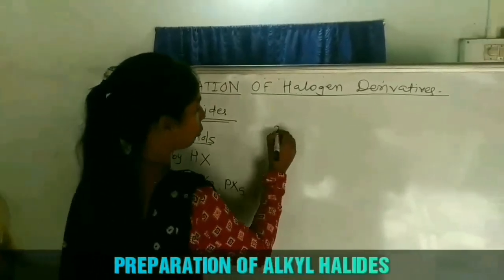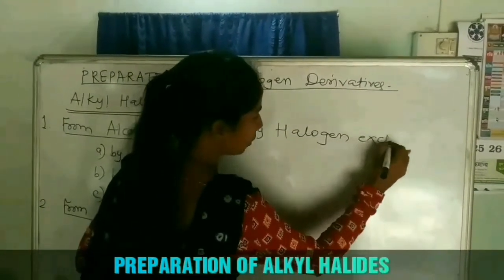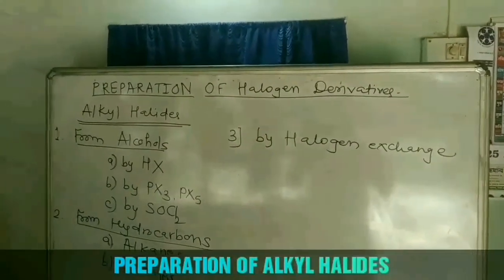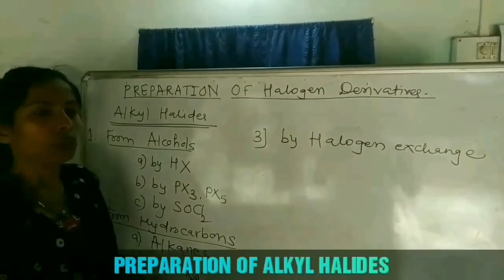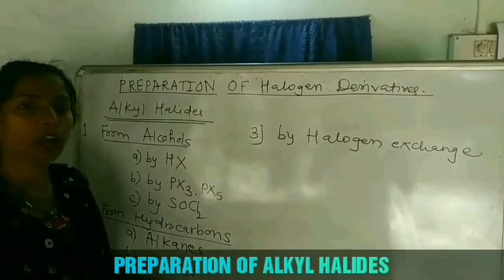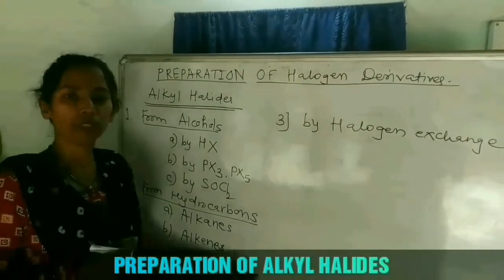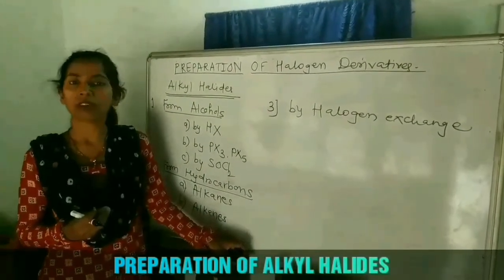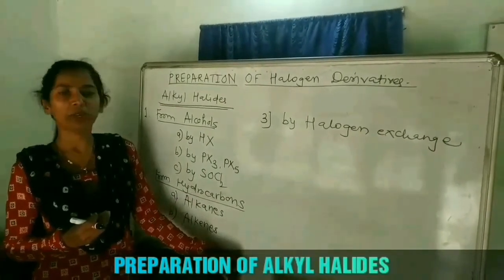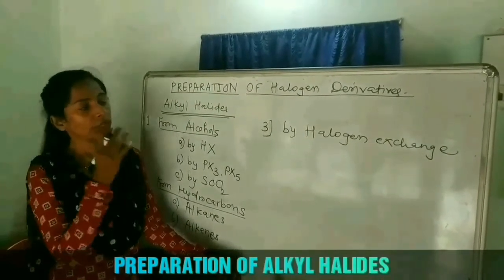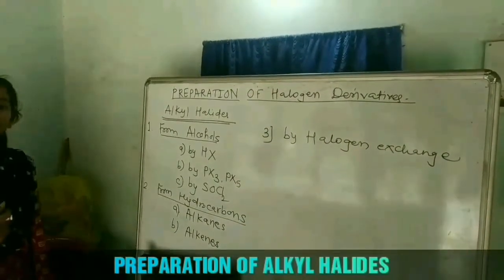The third preparation method for alkyl halides is by halogen exchange. In this method, one alkyl halide can be converted into another alkyl halide by replacing the halogen. By this method, we can prepare alkyl iodides or alkyl fluorides from alkyl chloride or alkyl bromide. There are two named reactions: the Finkelstein reaction and the Schwartz reaction. These are the three preparation methods for alkyl halides.